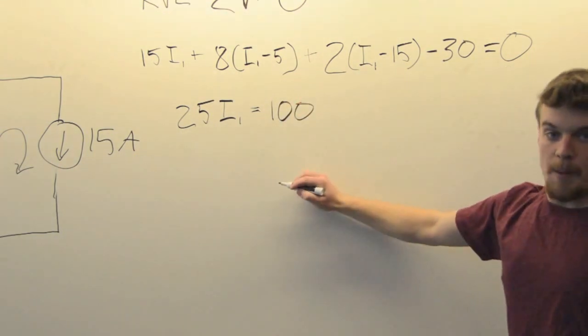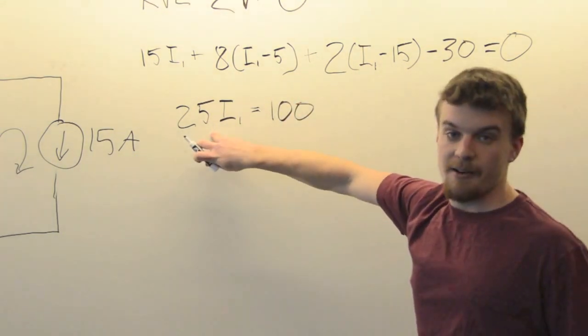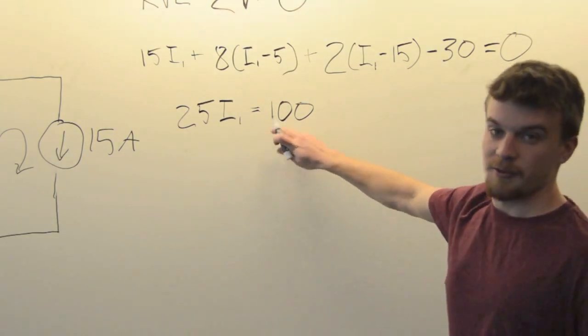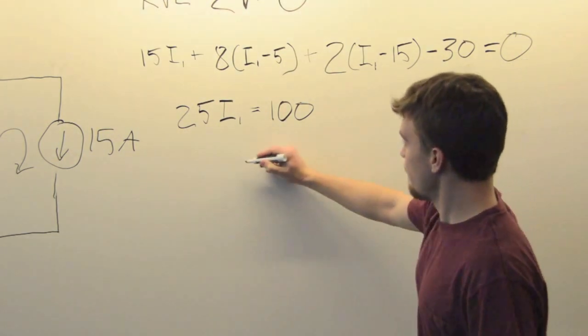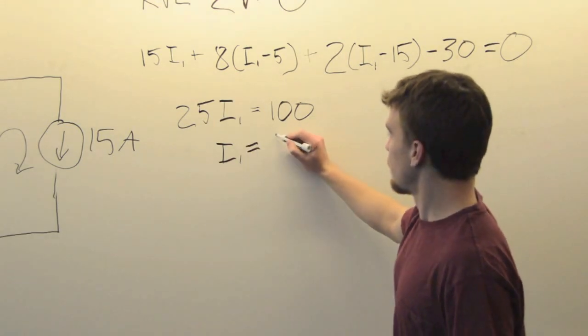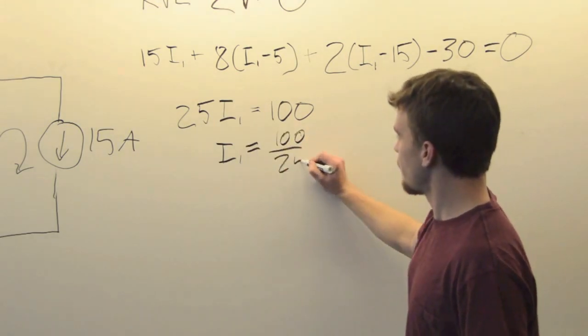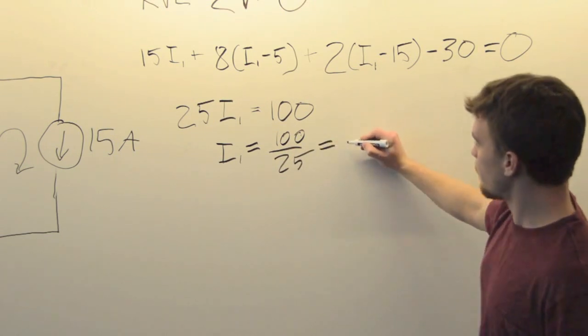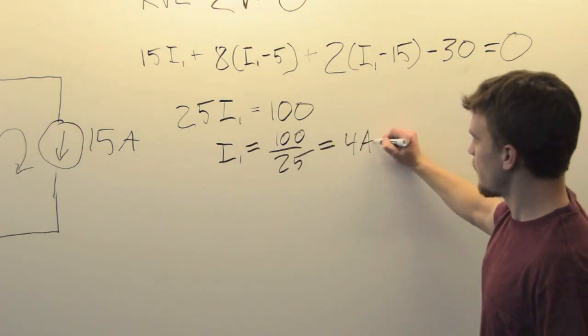So we have 25 I1 is equal to 100 volts. Now to get I1, we simply go 100 over 25. I1 is equal to 4 amps.